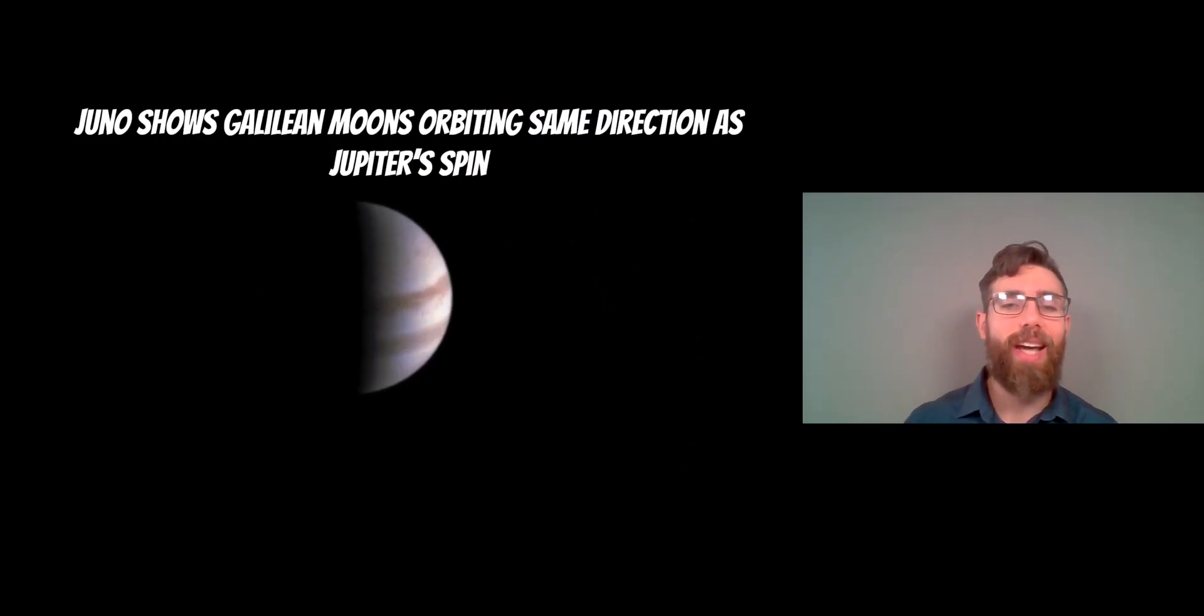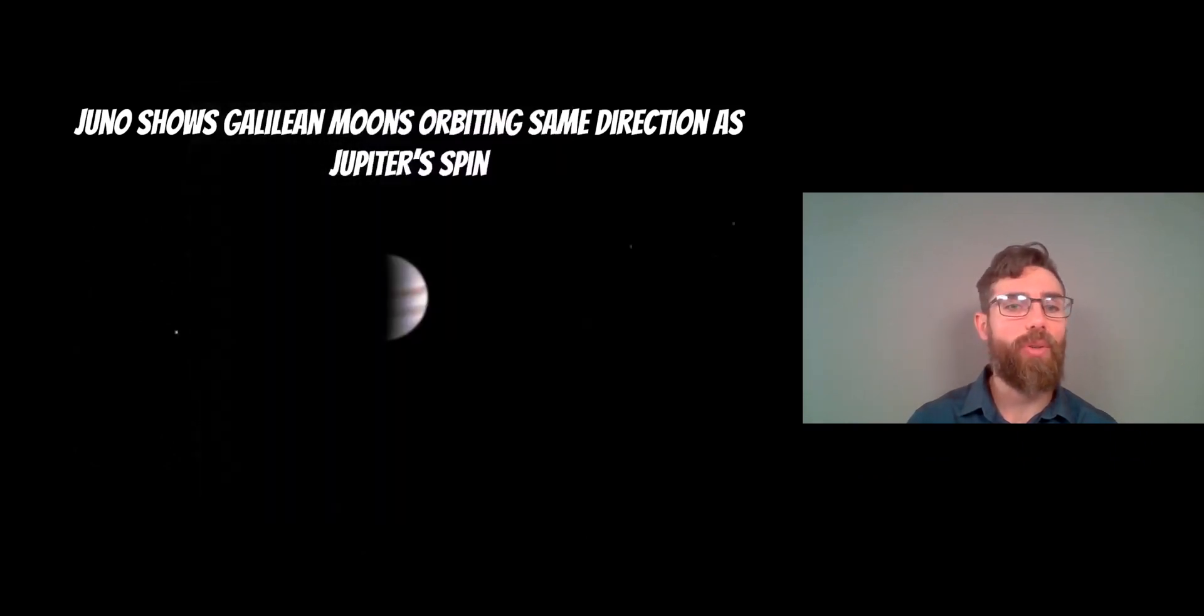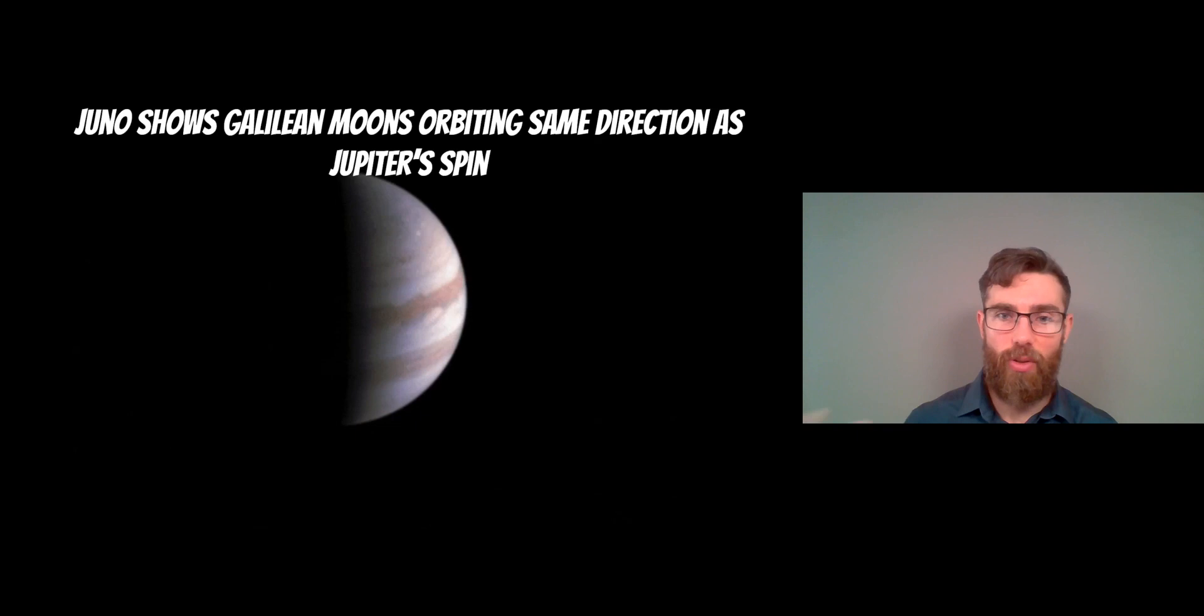So you can see it from your back garden if you want to. Basically, the Galilean moons formed with Jupiter. They orbit the same direction that Jupiter is spinning. So it's a good example.